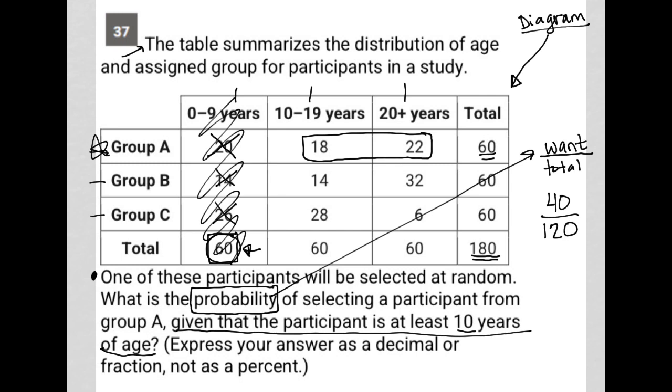So when I reduce this fraction, 40 divided by 120, I like to cross out zeros. So 4 divided by 12, that answer is one third. So one third is your answer here.